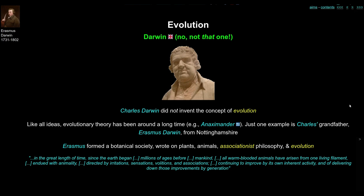We would still say something pretty similar today. Evolution has happened over millions of years, all animals are related somehow to the same original entity, and animals have behaviours and psychologies — irritations, sensations, volitions and associations — that we might recognise today. In fact, it sounds quite similar to the early psychological schools of Wundt and James.